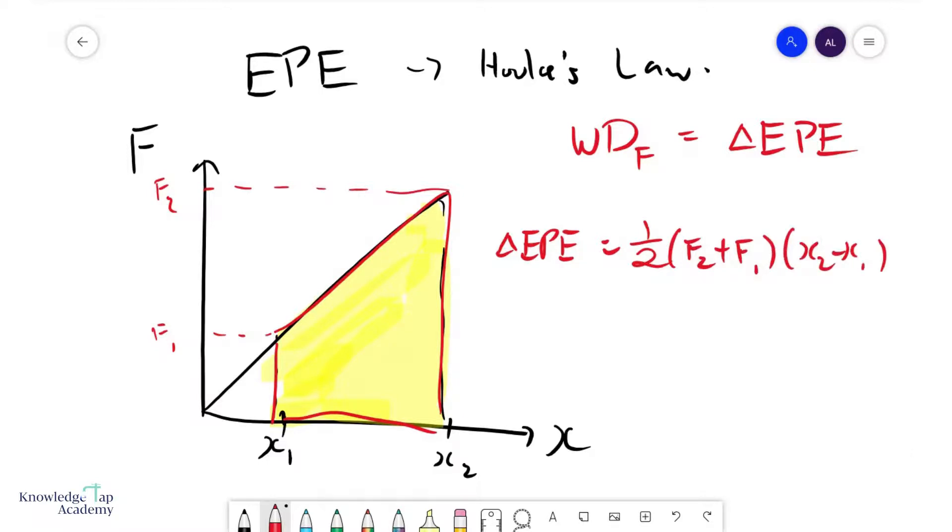But remember that we can use Hooke's law, F equals KX, to get it in terms of the spring constant. So F2 is simply KX2 plus KX1 times X2 minus X1.